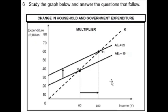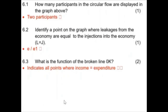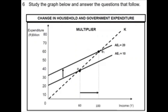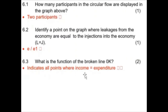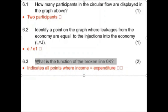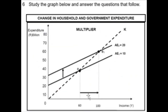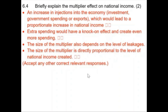What is the function of the broken line? For two marks: it indicates all the points where income equals expenditure — where my 10 rand is my 10 rand. But this is the perfect world, not reality. We have seen that an additional 10 rand injection leads to an additional 40 rand worth of income.